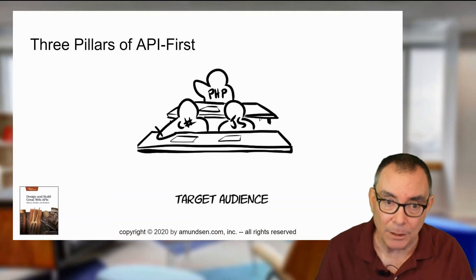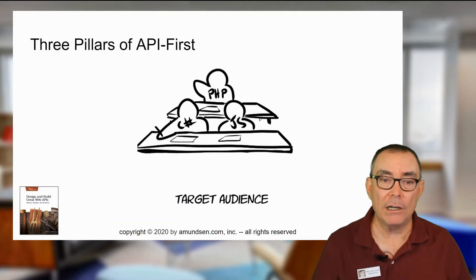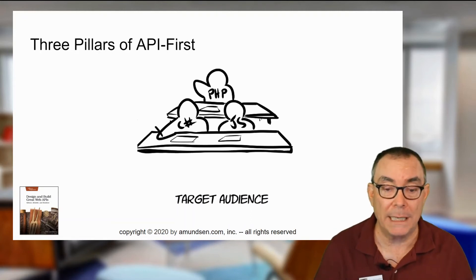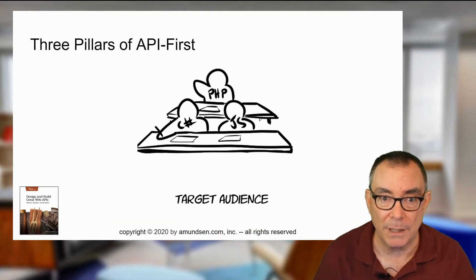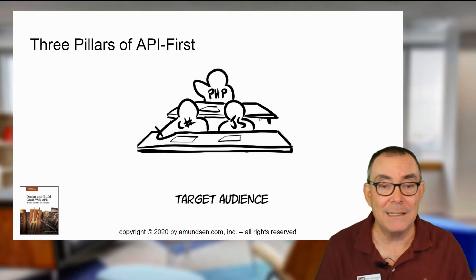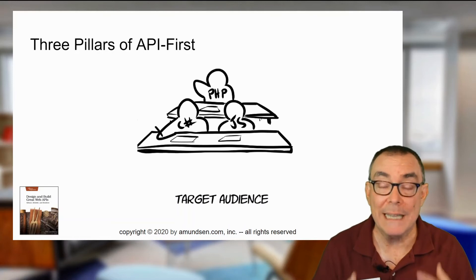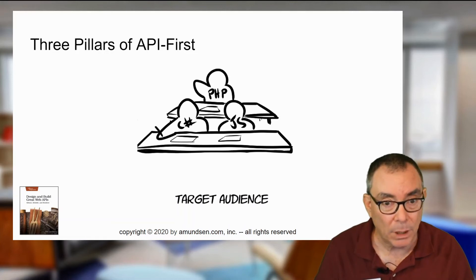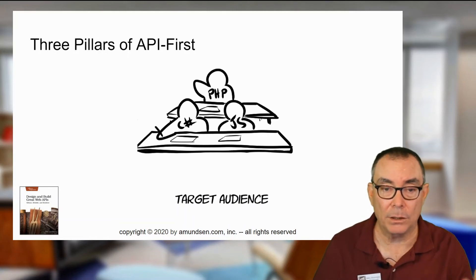That leads to the second element, which is the one Thomas referred to: your target audience. Knowing who they are and knowing what problems they're trying to solve and how they're used to solving it matters a lot. If I'm writing for PHP developers, the API is going to look different than if I'm writing for C-sharp developers. If I'm writing for developers inside my own enterprise, I design and document that very differently than if I'm designing an API for people I will never meet. It's really important to understand who your target audience is, what their problem is, and how you can design that API to make sense for that particular audience.